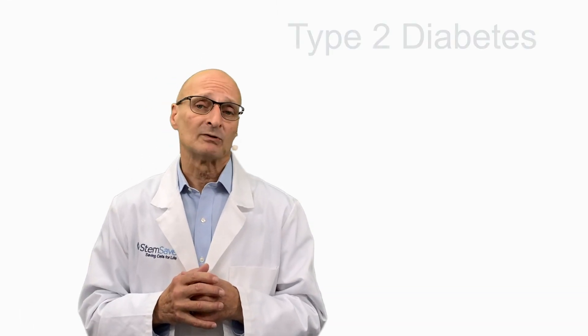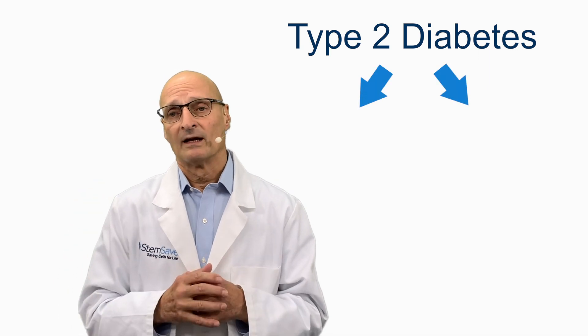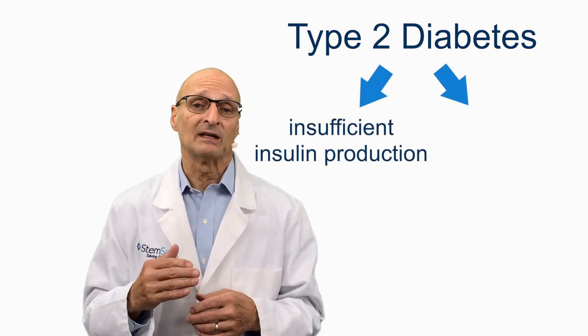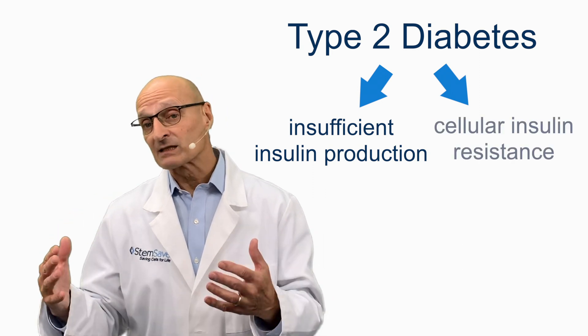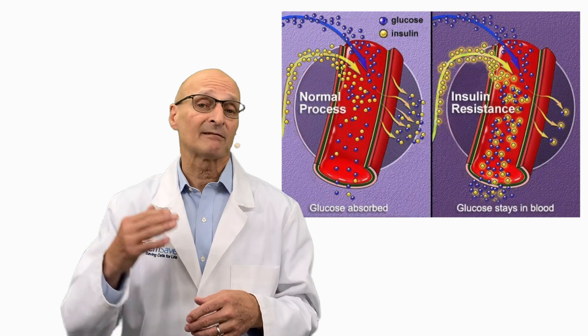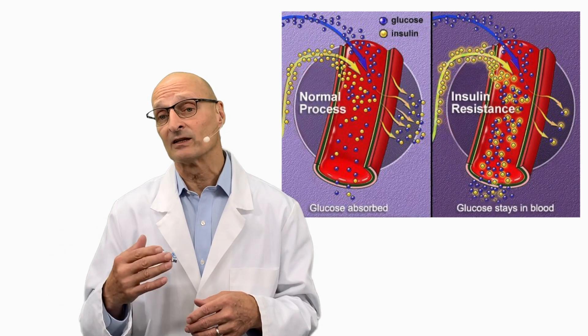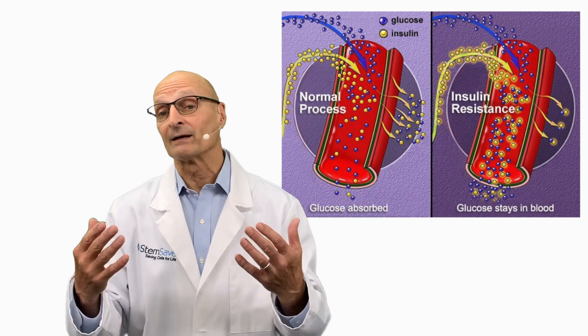Treating type 2 diabetes is an especially difficult problem as it is a two-pronged issue. The pancreas does not produce enough insulin, while cells become increasingly resistant to insulin. Specifically, the body's pancreatic beta cells are unable to produce sufficient amounts of insulin to overcome this developed resistance.